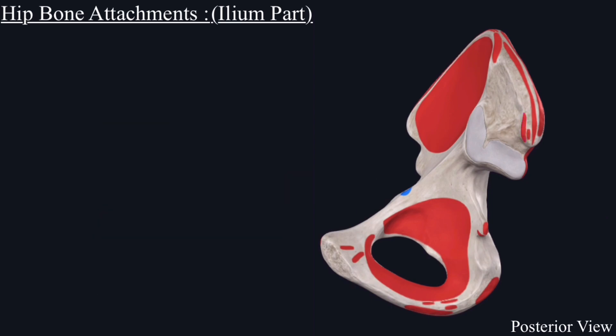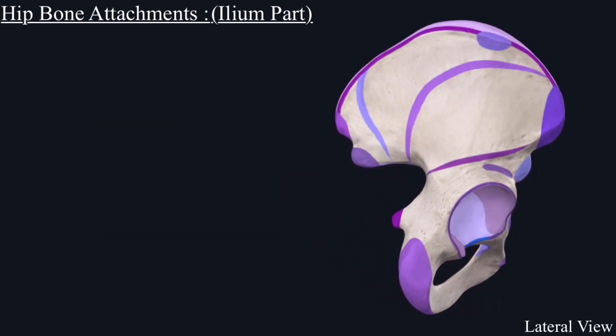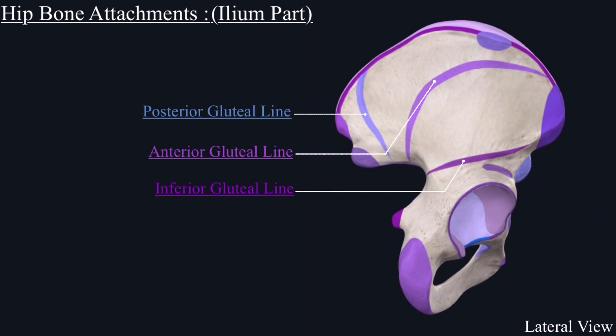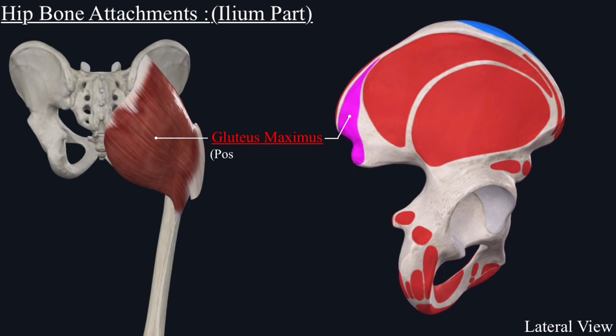On the lateral side of the iliac crest are present three gluteal lines. Posterior to the posterior gluteal line originates the gluteus maximus muscle.